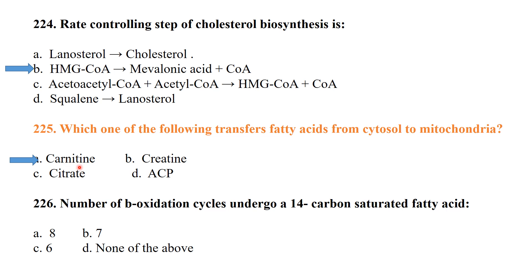Number of beta-oxidation cycles for a 14-carbon saturated fatty acid: the formula is to divide the number of carbons by 2. For 14 carbons: 14 ÷ 2 = 7, but the number of beta-oxidation cycles is 6, because the last acetyl-CoA does not require an additional cycle.